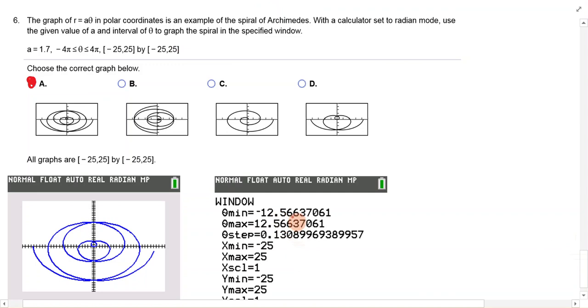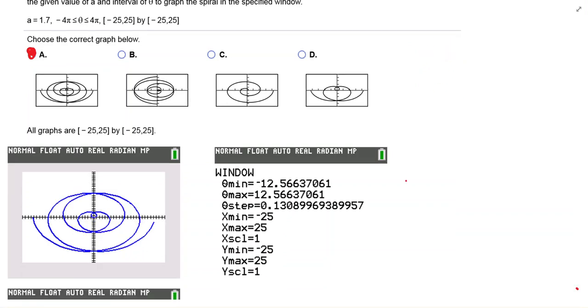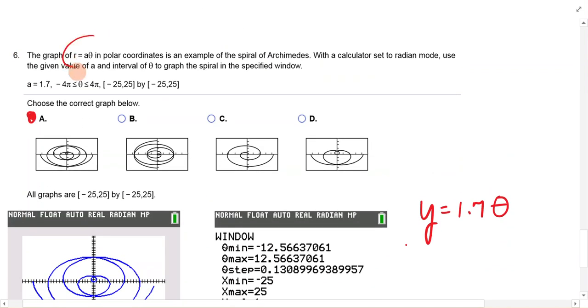And these are your x's and y's on the max. So when you go to your window right here, theta min is negative 4 pi. It'll put a decimal, but you can put in negative 4 pi. And this is positive 4 pi. And negative 25 and 25 for the y mins and maxes. Because in your y equals, you're putting y equals 1.7 theta.